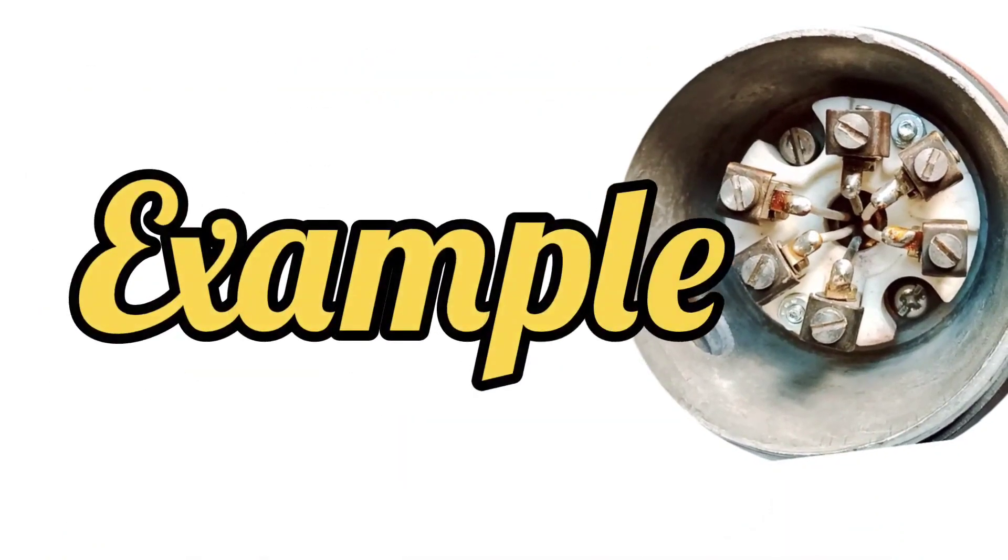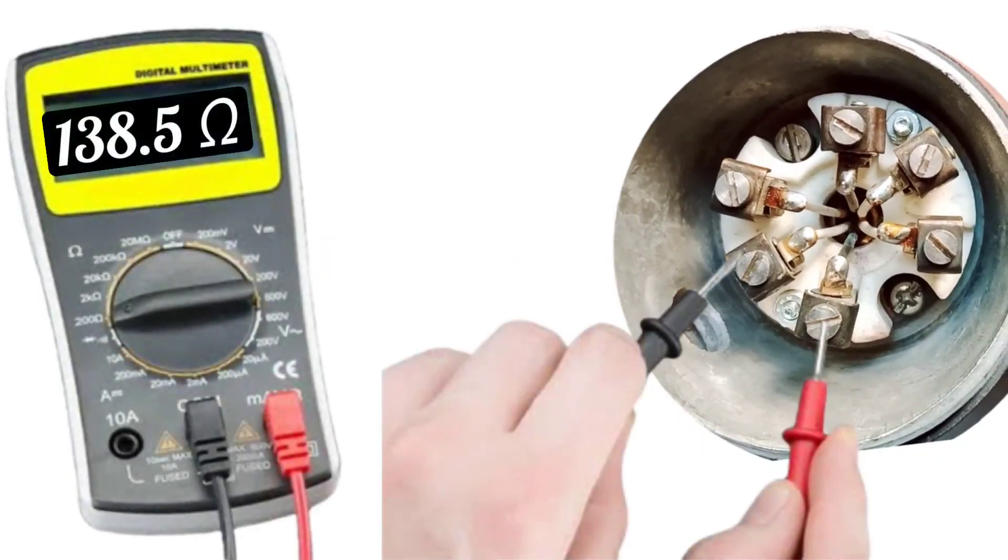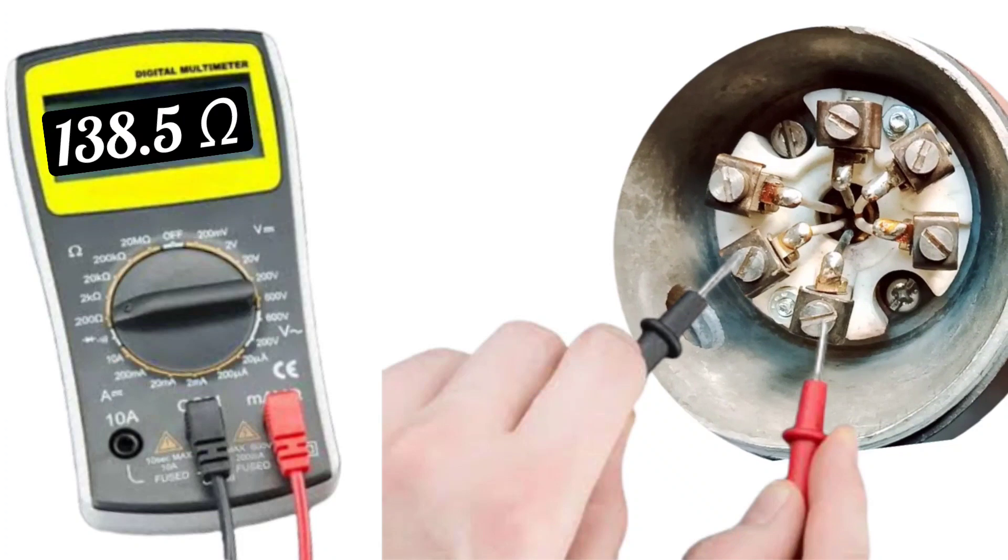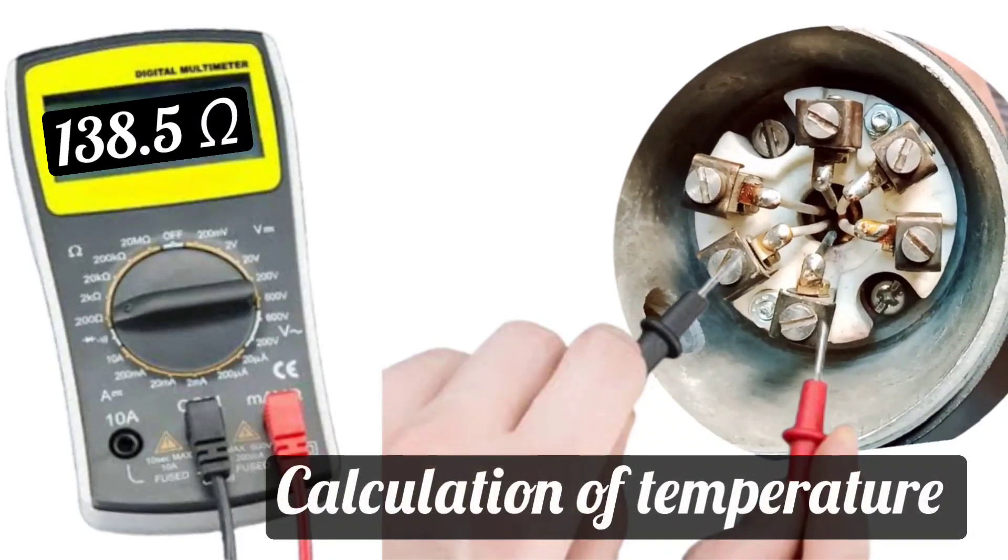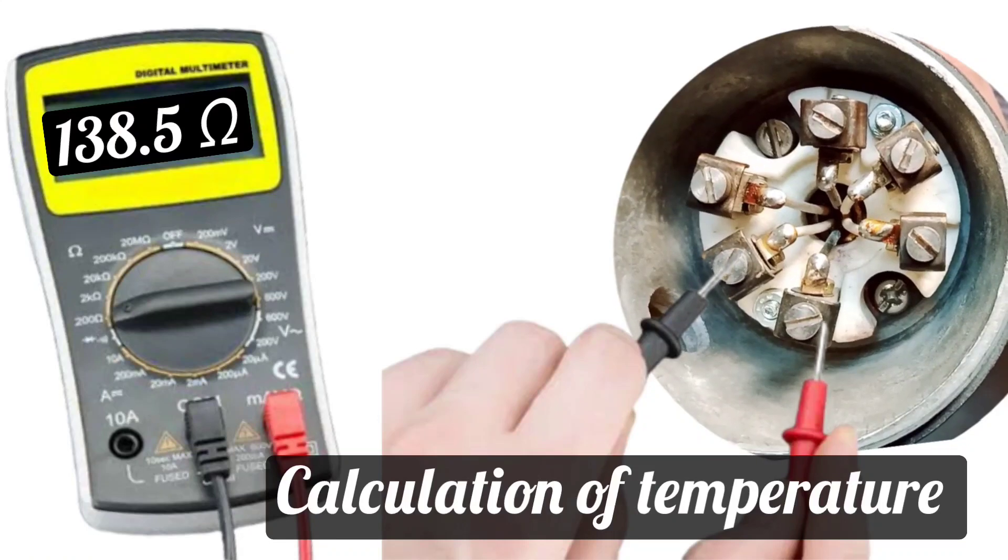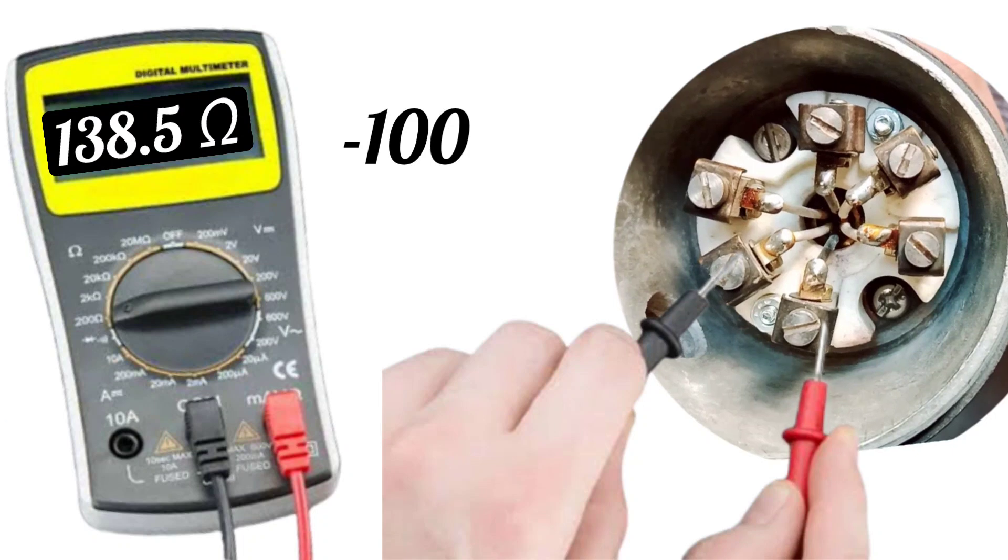Let's understand this with an example. For example, if the resistance of RTD is showing 138.5 ohms, then calculate the temperature. Subtract 100 from 138.5, it will be 38.5.